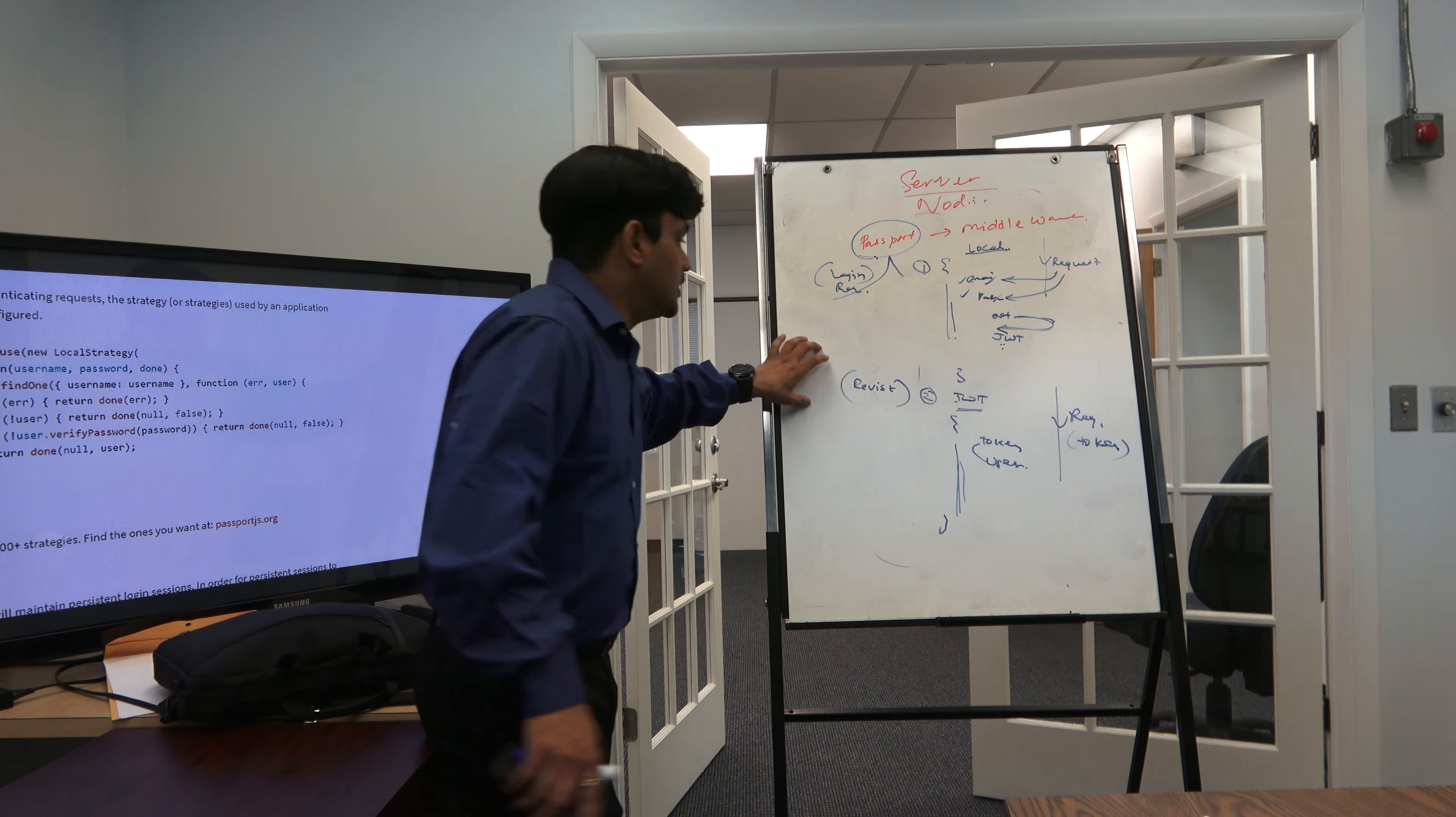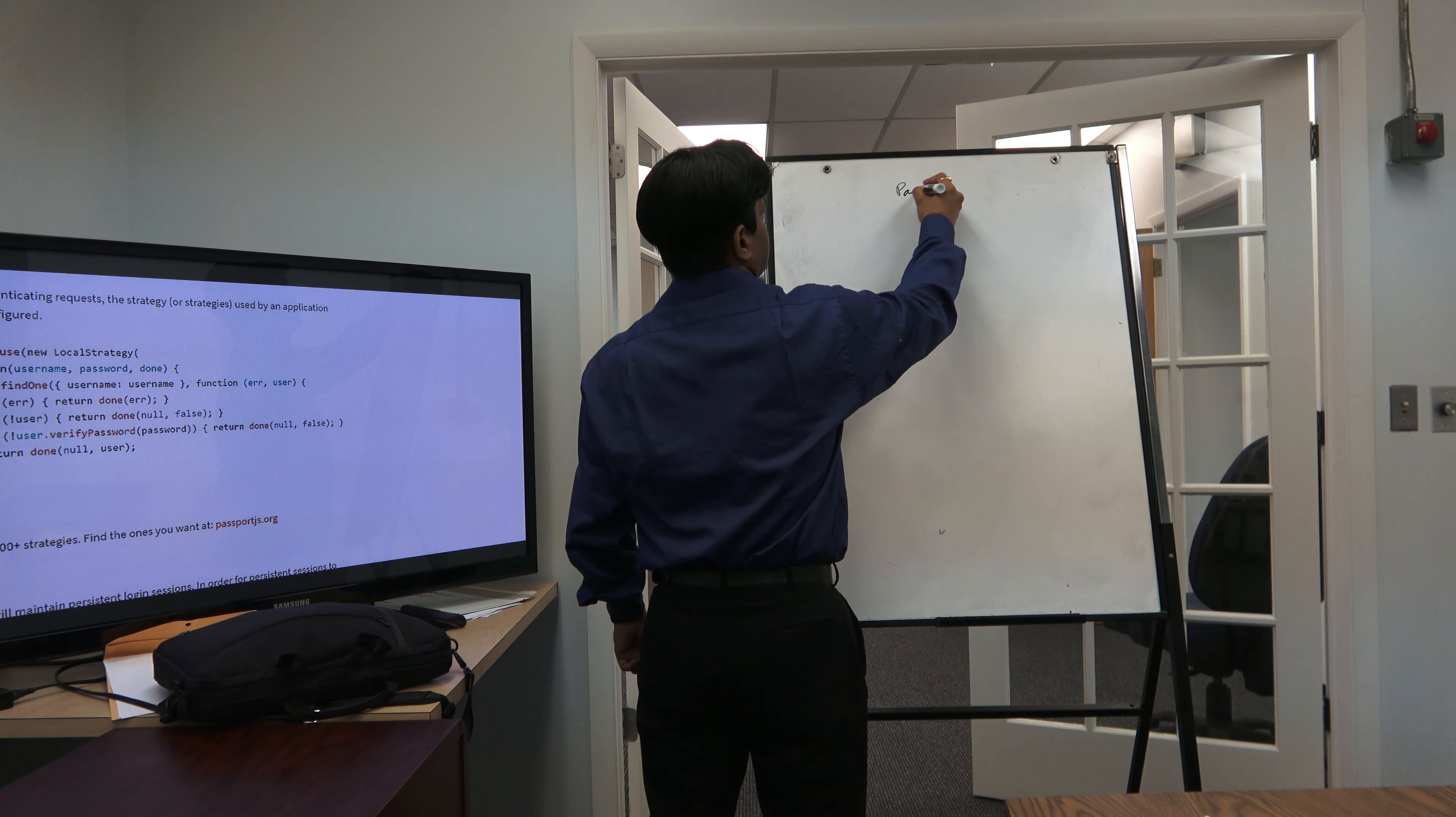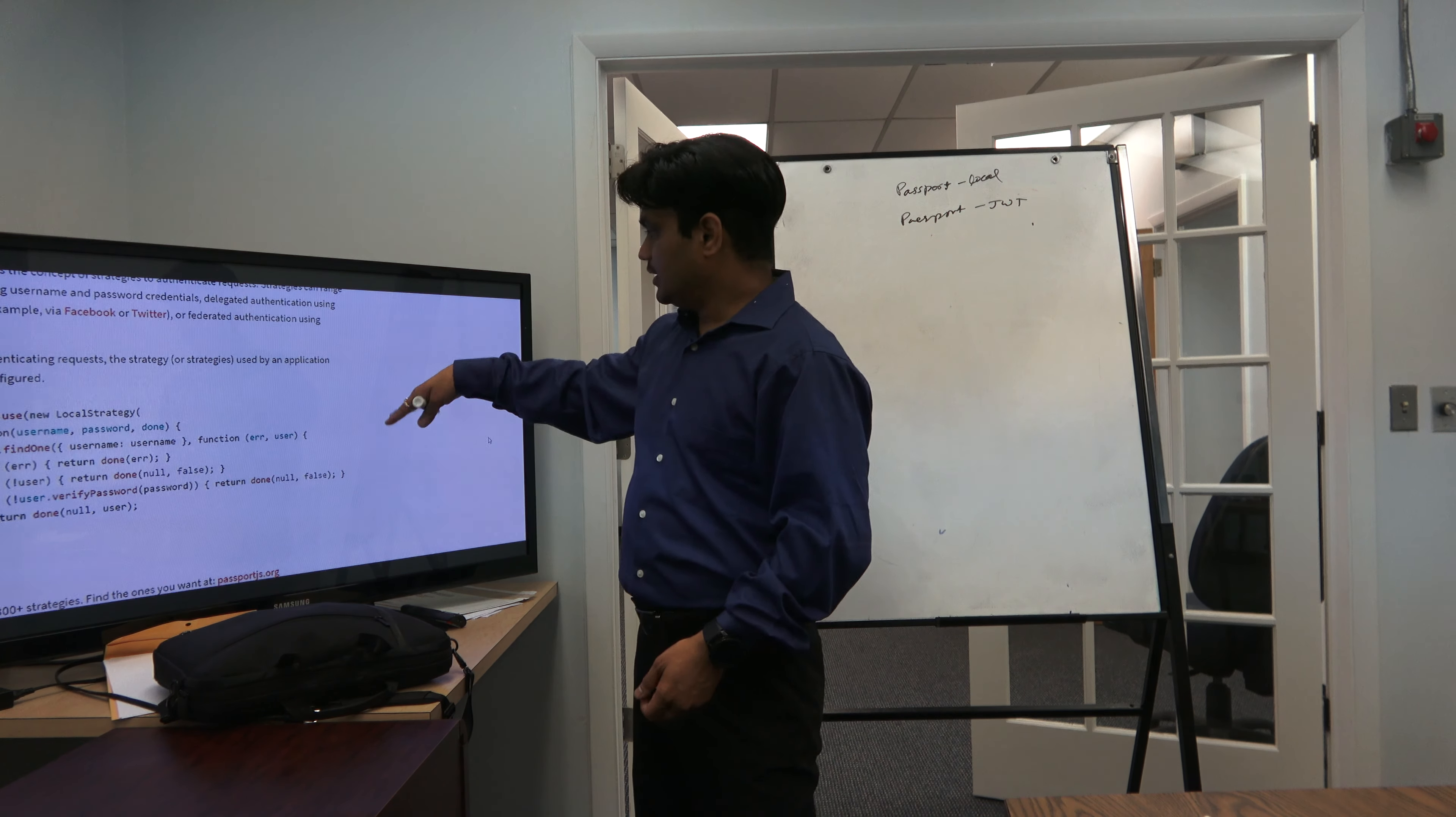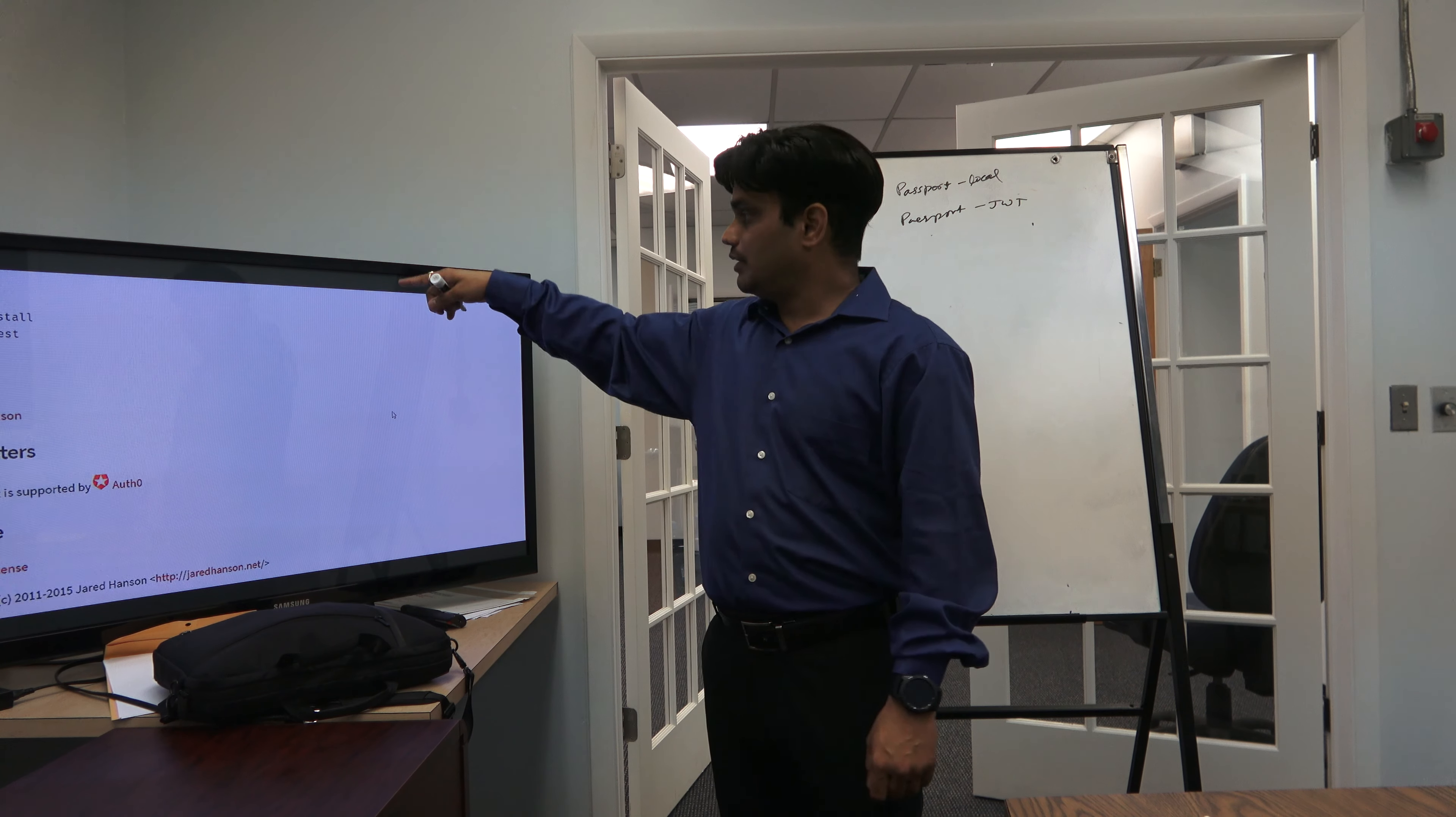Therefore, Passport has two different middleware that you can use. They have many middleware, but I'm just saying there are two middleware that we are interested in: one is passport-local, another is passport-jwt. If you see those, they should be mentioned in their website. Just search for JWT in this file.